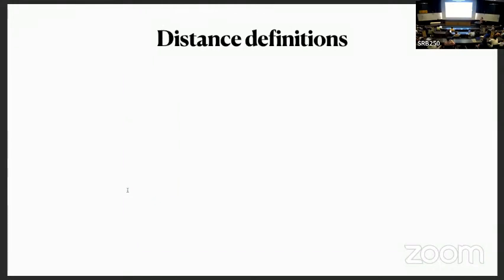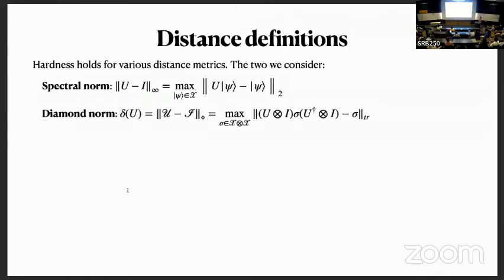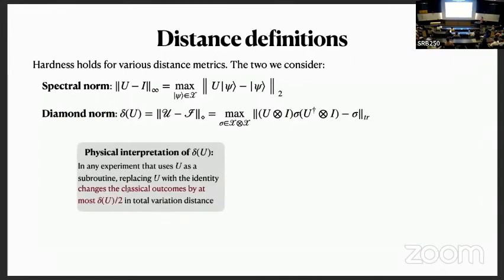The hardness results I talked about hold for a variety of distance metrics. The two we're going to focus on are spectral norm and diamond norm. Spectral norm is just the maximum eigenvalue. Diamond norm is defined for channels; its physical interpretation is that if you have some experiment that uses your unitary U as a subroutine and then you replace it with the identity, the diamond distance bounds the total difference in outcomes of your experiment in total variation distance, whether or not you use U or identity.